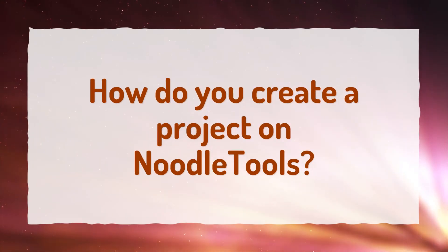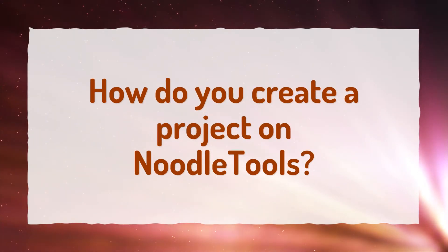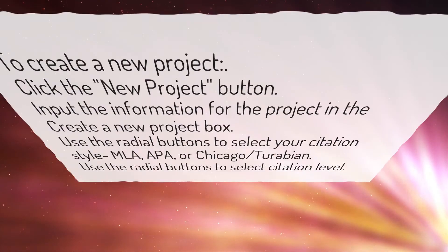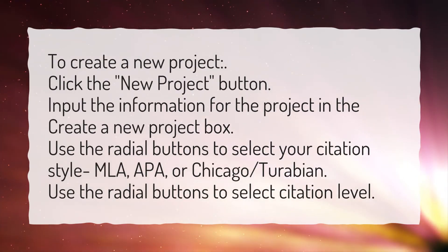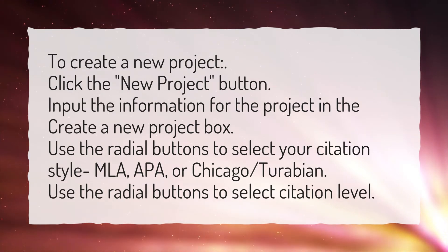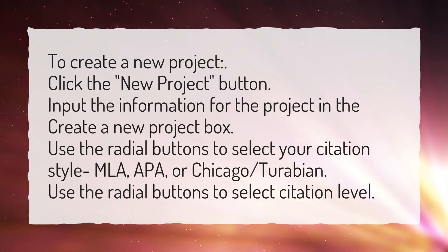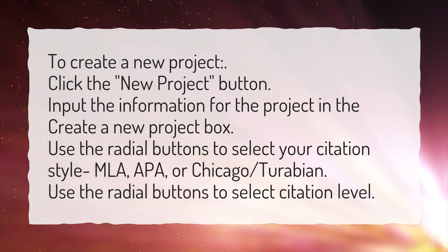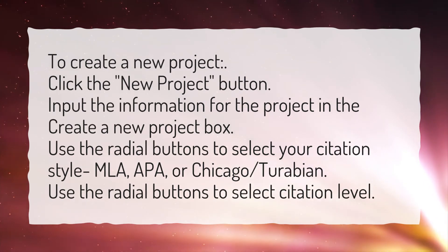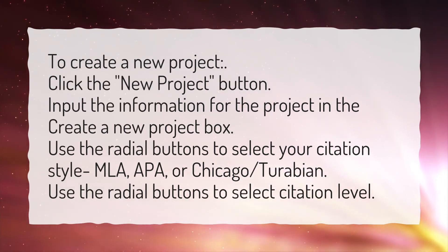How do you create a project on NoodleTools? To create a new project, click the New Project button. Input the information for the project in the Create a new project box. Use the radial buttons to select your citation style — MLA, APA, or Chicago/Turabian. Use the radial buttons to select citation level.